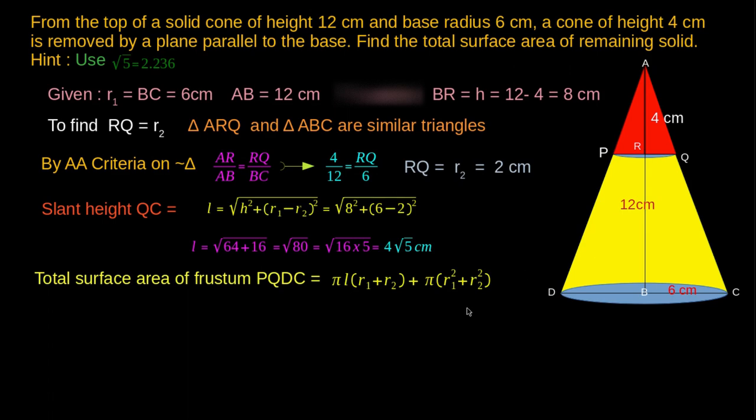CSA of the frustum of the cone is pi L into (R1 plus R2) and area of two bases is pi into (R1 squared plus R2 squared).